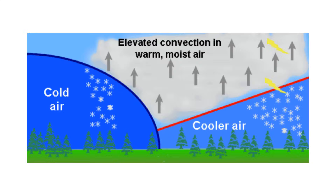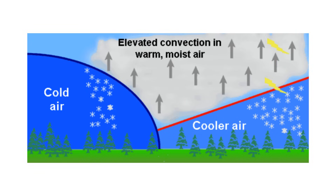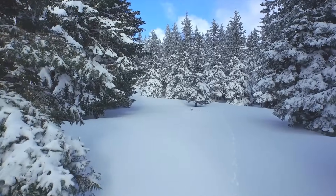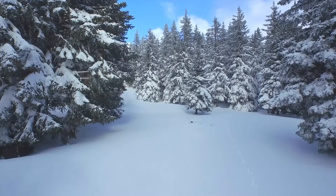An occluded front forms when a warm air mass is caught between two colder air masses. The colder air mass moves under and pushes up the warm air mass. The coldest air mass then moves forward until it meets a cold air mass that is warmer and less dense. Sometimes the two colder air masses mix. An occluded front brings cool temperatures and large amounts of rain and snow.